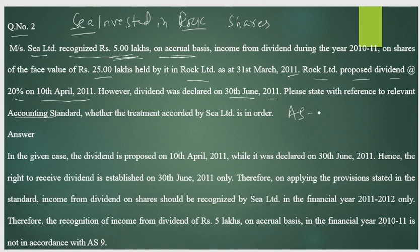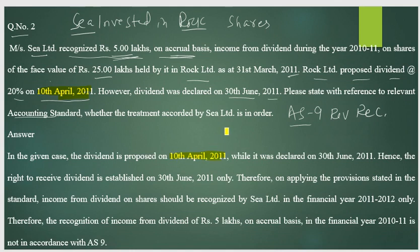The applicable standard is AS-9, Revenue Recognition. In the given case, the dividend was proposed on 10th April but actually declared on 30th June 2011. So the proposed date and the declared date are different — the declared date is 30th June.